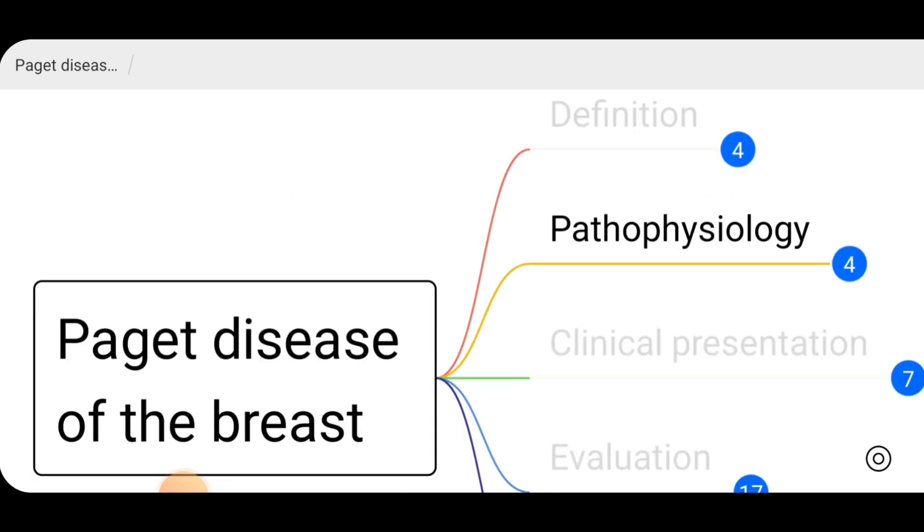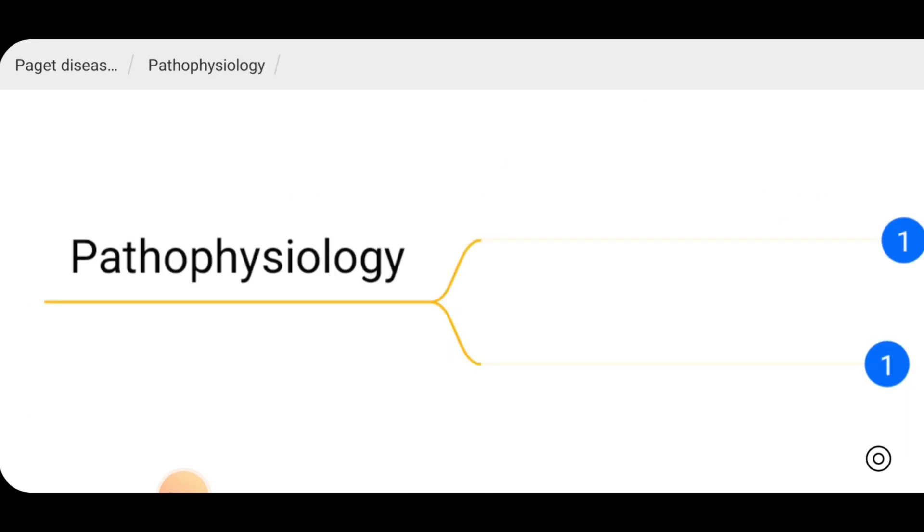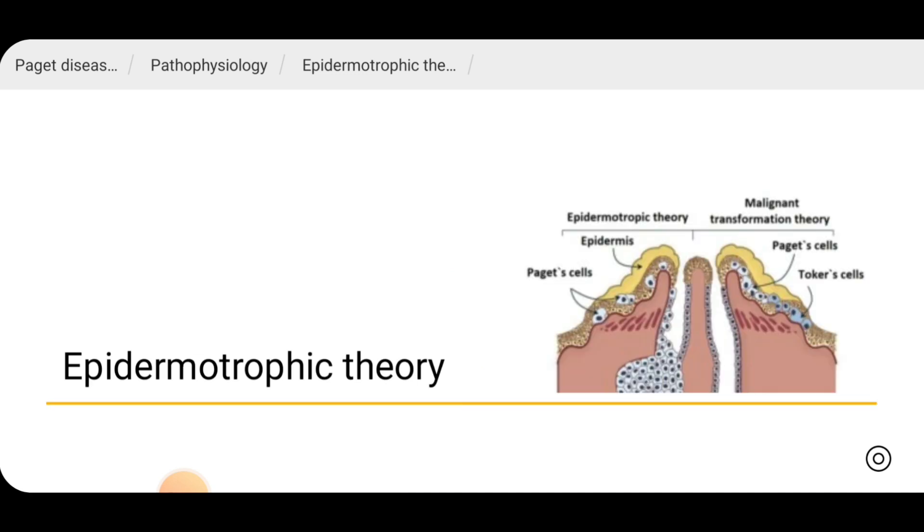To understand this condition, let's look at the pathophysiology. There are two theories, one is epidermotrophic theory. In epidermotrophic theory, it says that when there is breast carcinoma, the malignant cells traverse through the ducts towards the epidermis and those malignant cells appear as Paget cells in the epidermis. That is one theory.